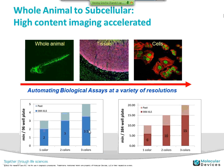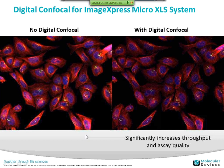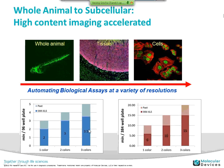These assay times were validated with our own in-house applications. Recently in a demo, we were able to actually acquire a customer sample in 3 minutes for a 96-well plate. There's a little assay variability, but we think these numbers are something we can stand behind. For 384-well plates: one color we can do now in 6 minutes, two colors in 10, three colors in 15 — and we can probably beat that depending on your assays. These times are getting incredibly fast for multi-color, multi-well screens.